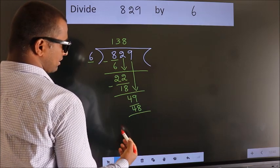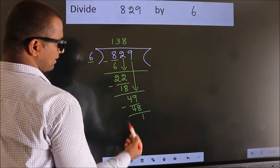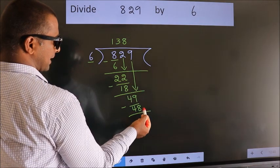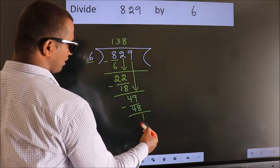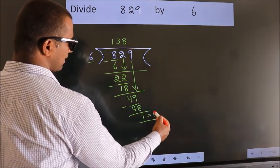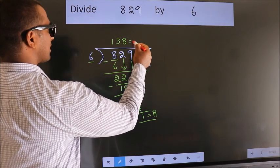Now we subtract, we get 1. No more numbers to bring it down. So we stop here. This is our remainder. This is our quotient.